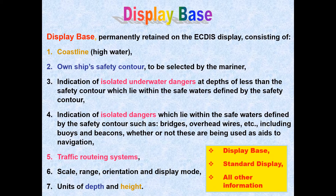The display base will show you the coastline, the own ship's safety contour, isolated underwater dangers of depths less than the safety contour which lie within the safe waters defined by the safety contour, isolated dangers which lie within the safe water such as fixed structures and overhead wires, scale and range and north arrow, units of depth and height, and display mode. When we discuss what is displayed in the standard display and all other information, you will realize that the display base misses out on a lot of information which is required for the safe navigation of the vessel.